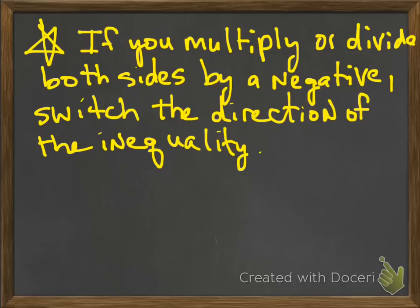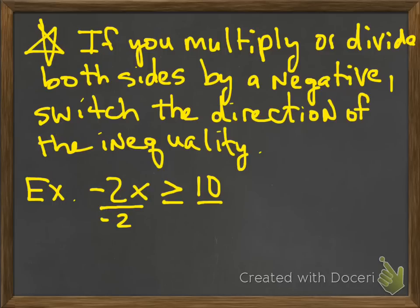Okay, I'm putting a star here, so this is something special to remember. If you multiply or divide both sides by negative, now, notice the key word. You're multiplying or dividing both sides by negative. So if I multiplied on one side by negative 2, and I multiplied on the other side by negative 2, this applies. Switch the direction of the inequality. Well, what the heck do you mean by that, sir? Let's look. Here's my example. Negative 2 times x is greater than or equal to 10. Okay, so I'm going to see here. This is multiplied. Negative 2 times x. So the opposite of that is dividing by negative 2.